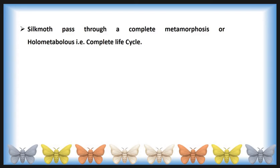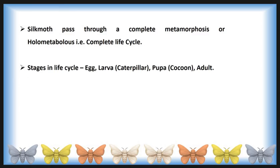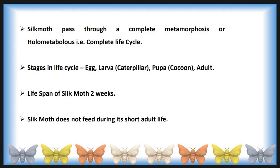The silk moth passes through complete metamorphosis, also called a holometabolous life cycle. The complete life cycle shows different life stages such as egg, larva (caterpillar), pupa (cocoon), and adult. The lifespan of the silk moth is 2 weeks, and the silk moth does not feed during its short adult life.